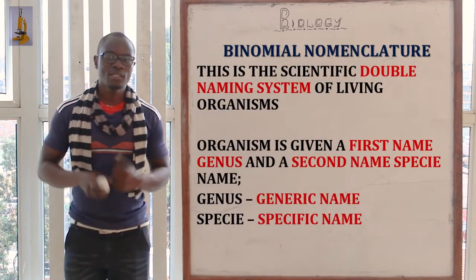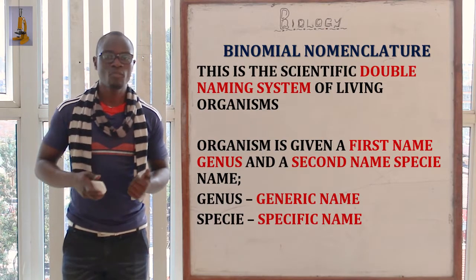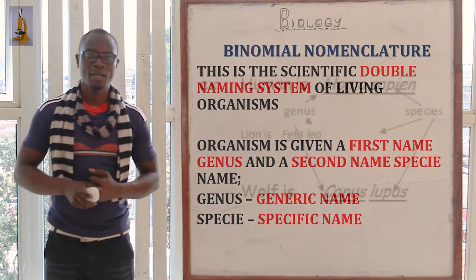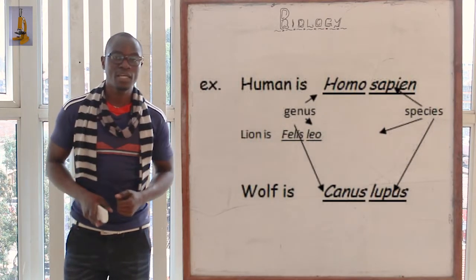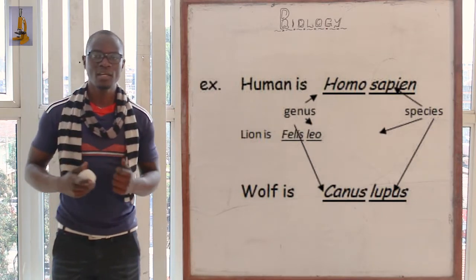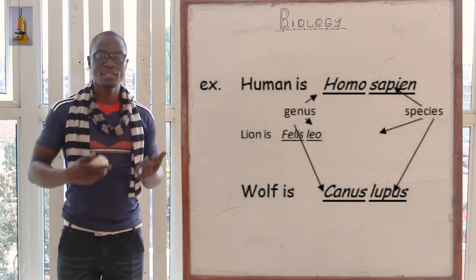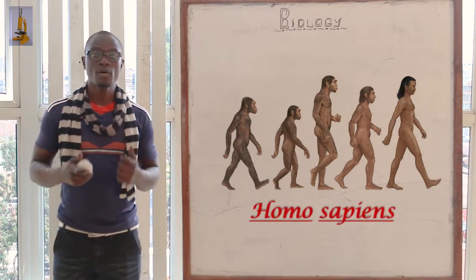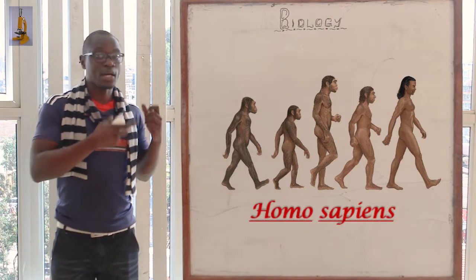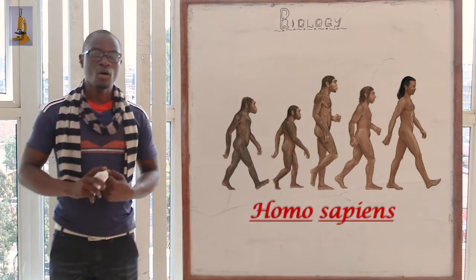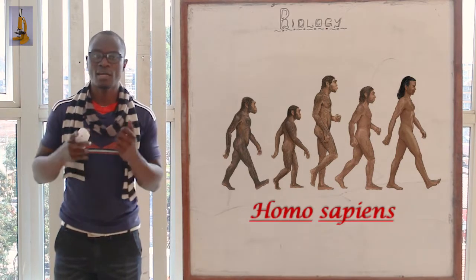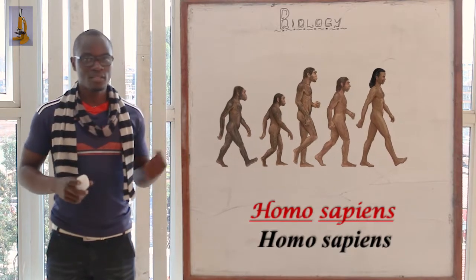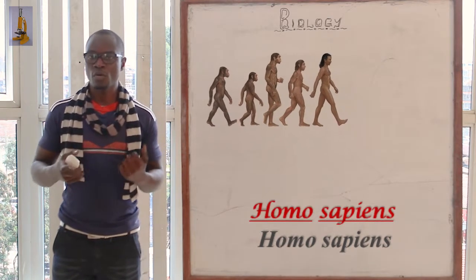In binomial nomenclature, the organism is given the first name, which is the genus name, and the second name, which is the species name. The genus name can also be called the generic name, and the species name can also be called the specific name. The genus name must begin with a capital letter and the species name must begin with a small letter. For example, the scientific name of the human being is Homo sapiens — the genus name begins with a capital letter. These names are underlined separately when handwritten, and italicized when typed.